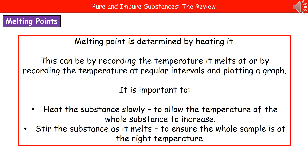To determine the melting point experimentally, we heat the substance and record the temperature. You can either record the temperature at which it melts, or record temperatures at regular intervals and plot a graph. If you do that, you'll find a plateau — a horizontal line at some point on the graph — and that is your melting point.